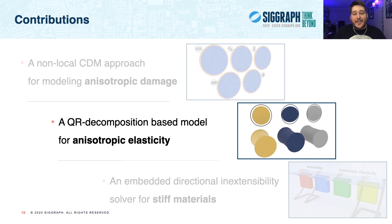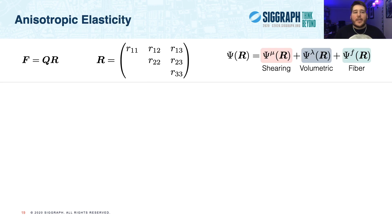So as I mentioned earlier, our anisotropic elasticity draws inspiration from our earlier work on MPM cloth modeling, and is rooted in the QR decomposition of the deformation gradient. Here, Q is a rotation matrix, and R is an upper triangular matrix, like shown. And previously, we saw that we will write our energy density as an additive decomposition between tensile, compressive, and fiber contributions.